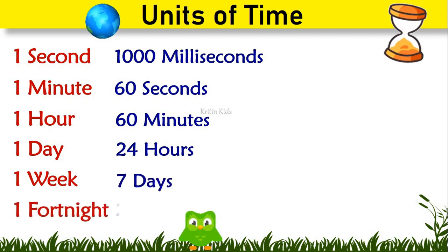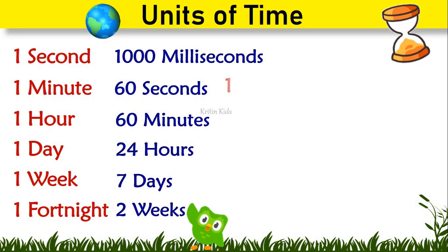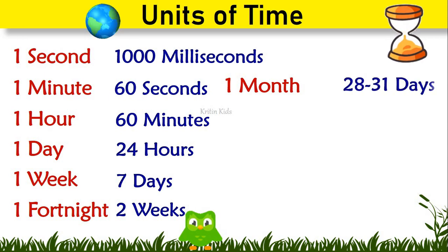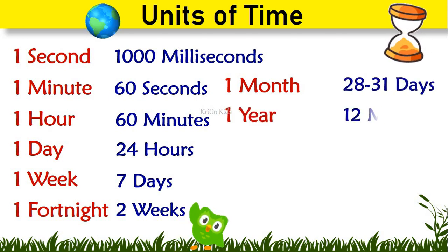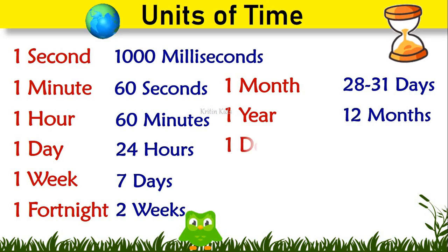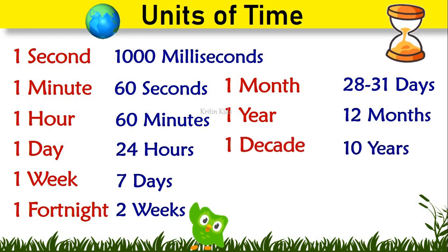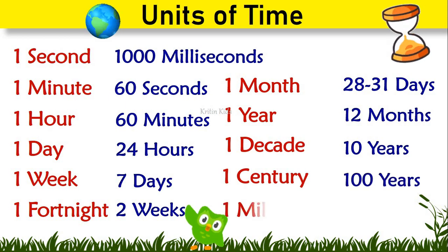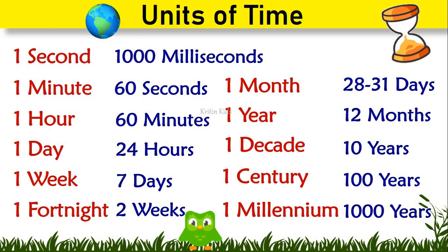1 fortnight is 2 weeks. 1 month is 28 to 31 days. 1 year is 12 months. 1 decade is 10 years. 1 century is 100 years. 1 millennium is 1,000 years.